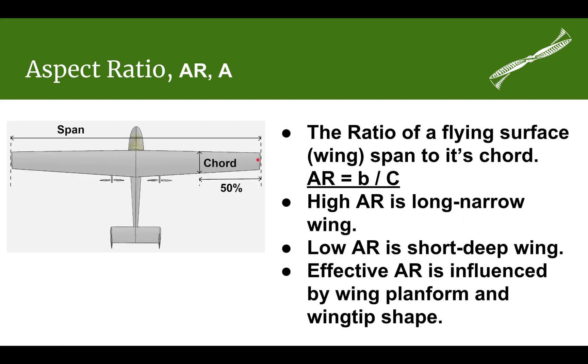The reason is that you have losses from high pressure air under the wing coming around the rounded surface to the top side, which reduces your effective aspect ratio.